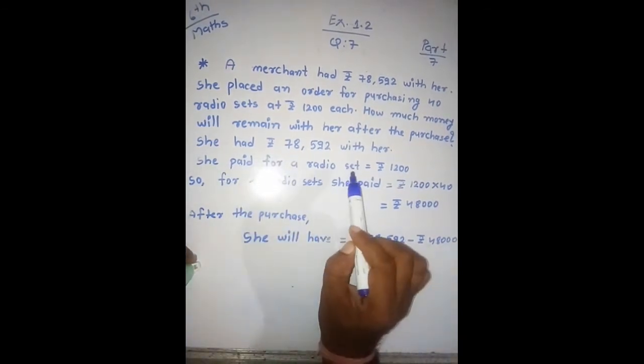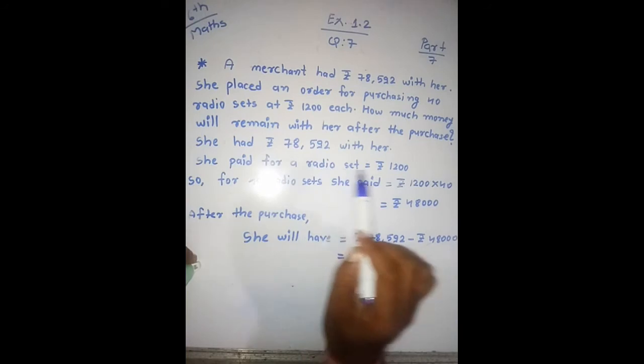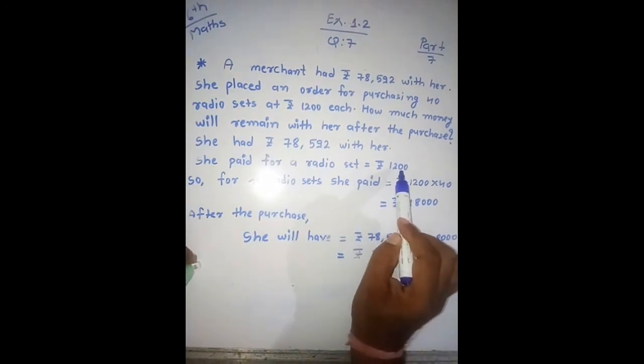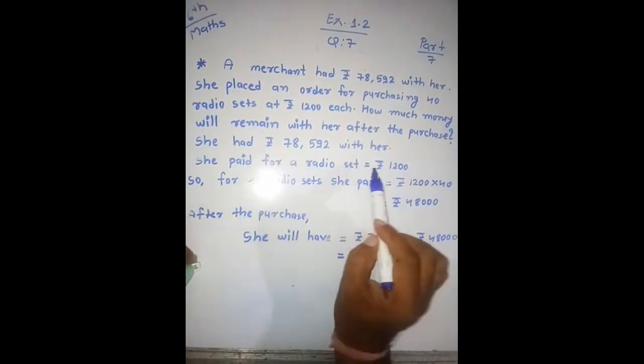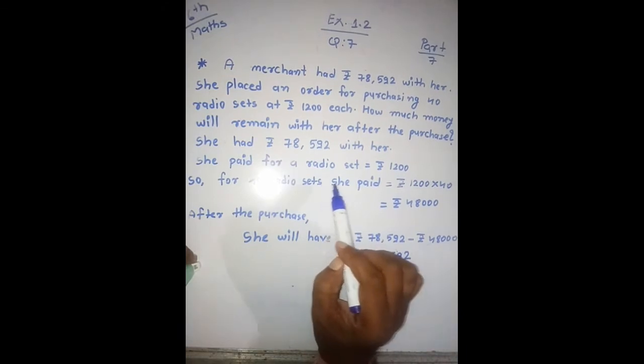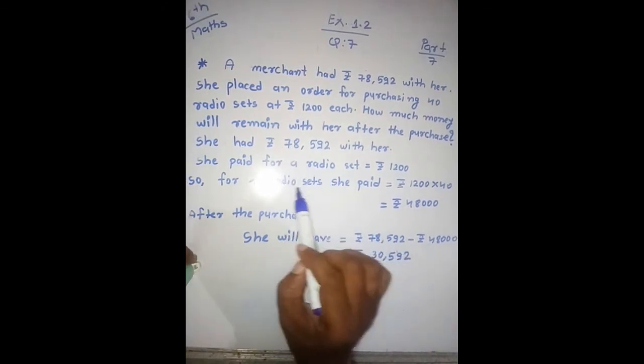She paid for a radio set. The price of a radio set is 1200. So if you buy 40 radio sets, if you buy 40 radio sets...